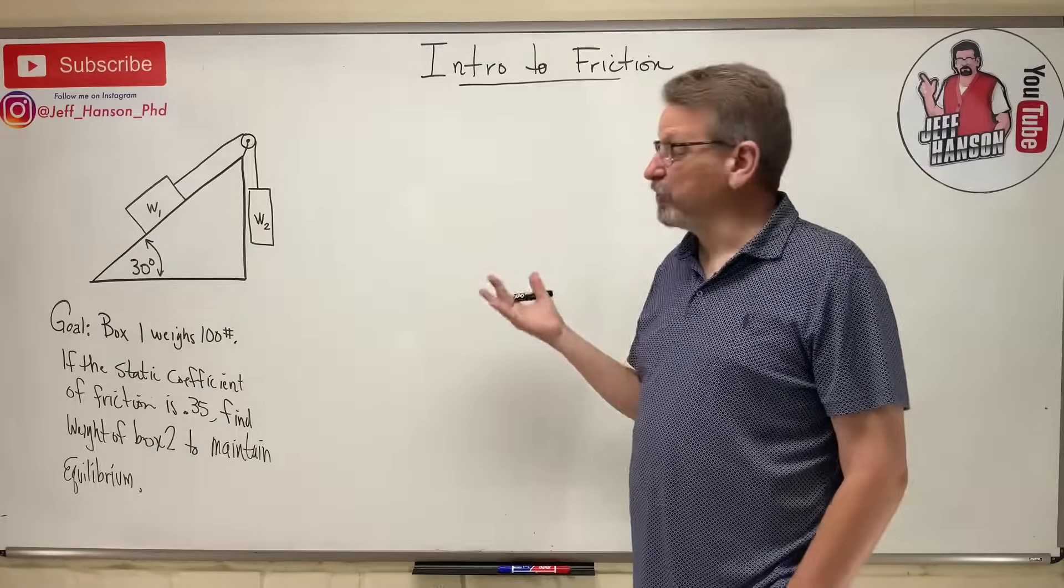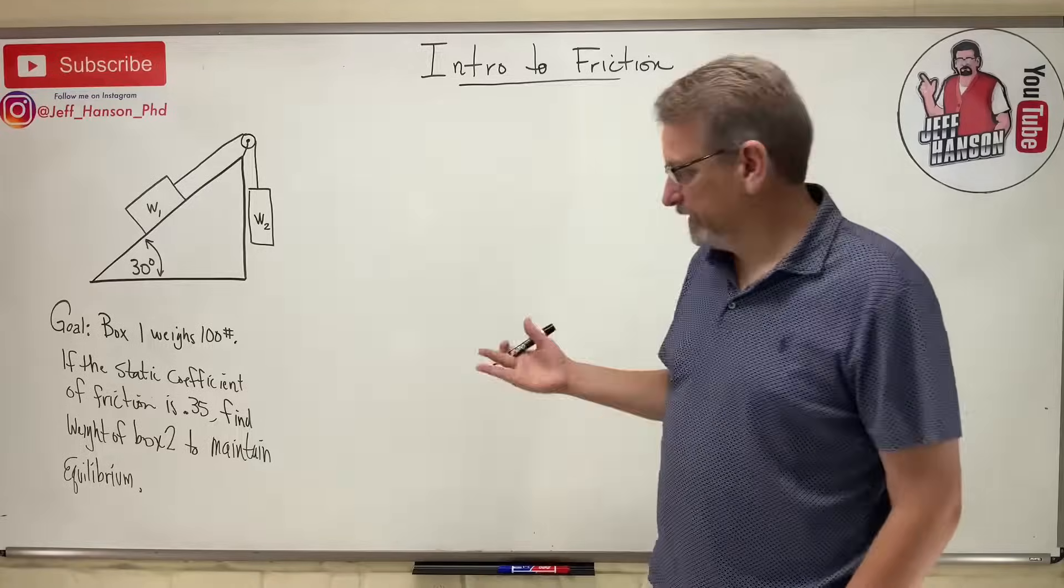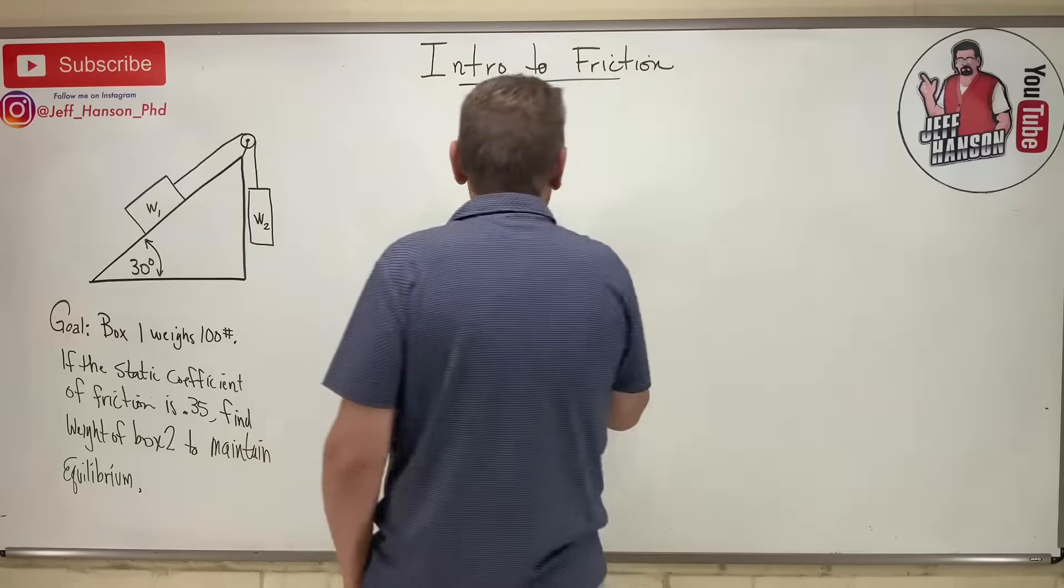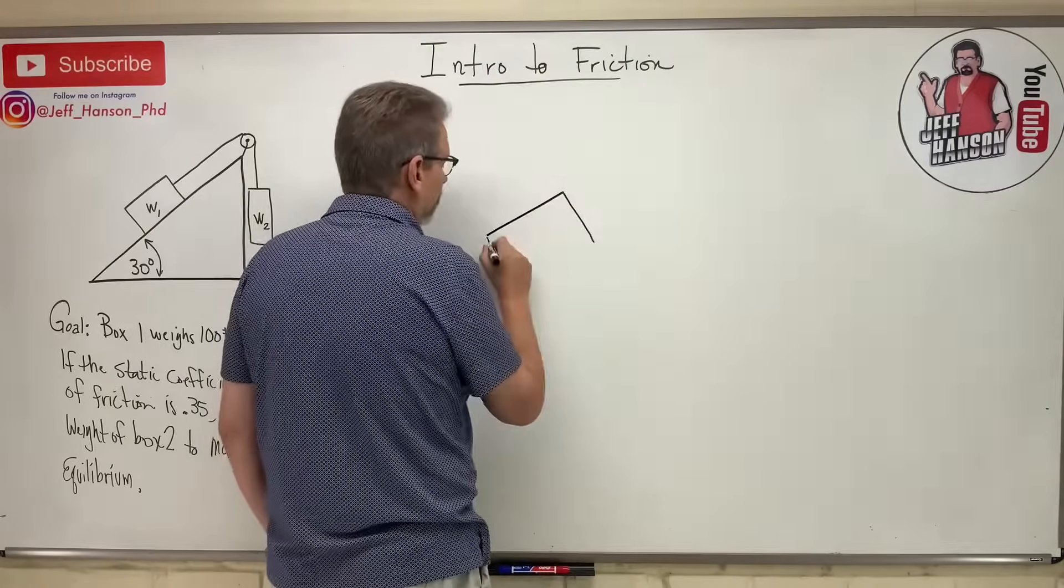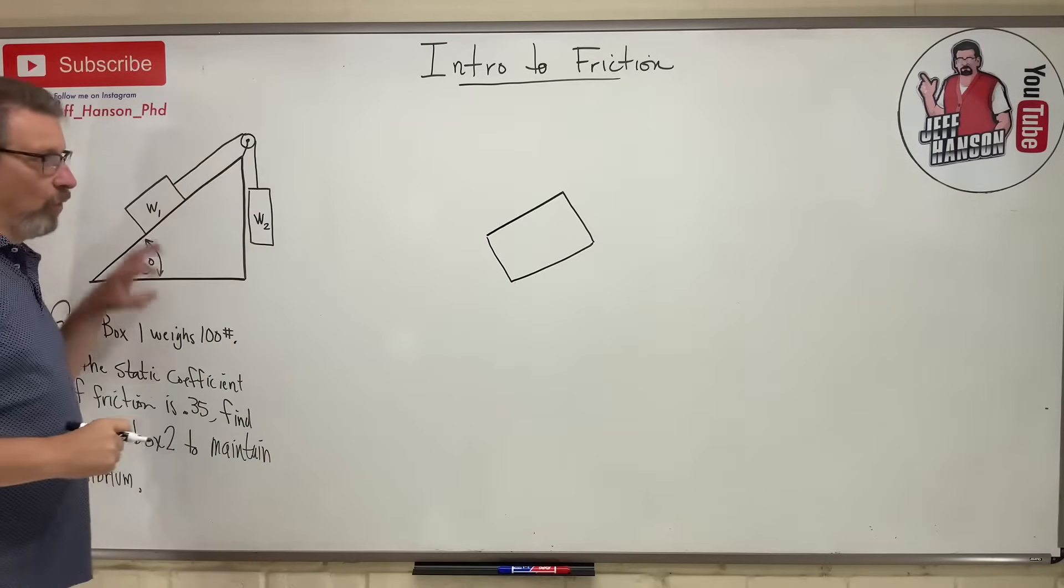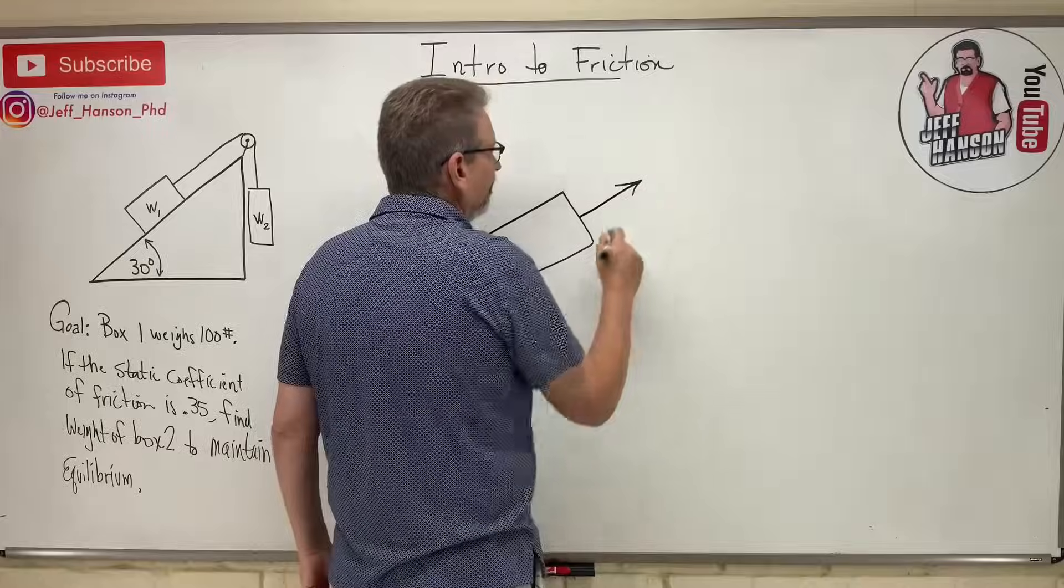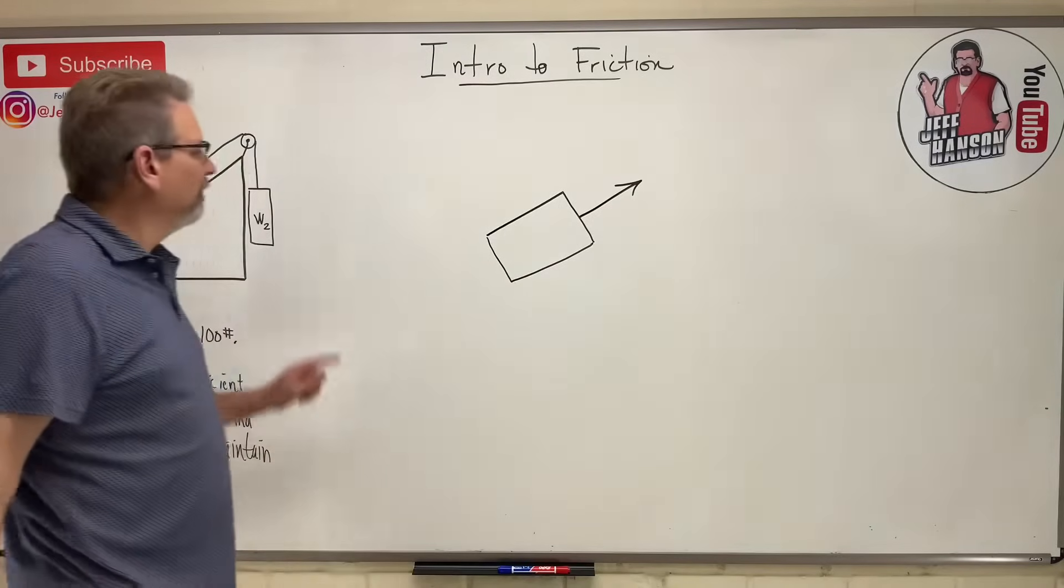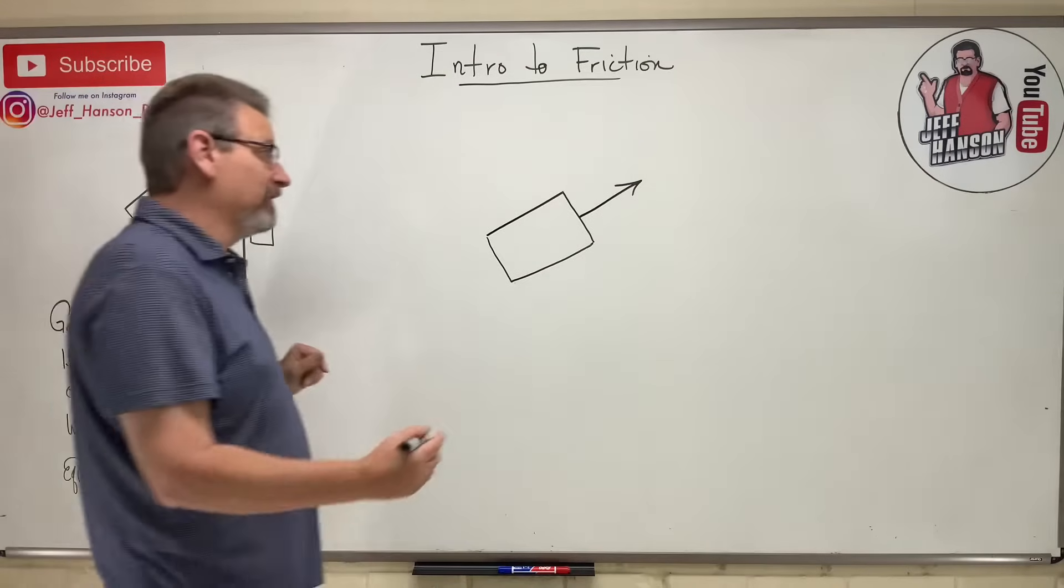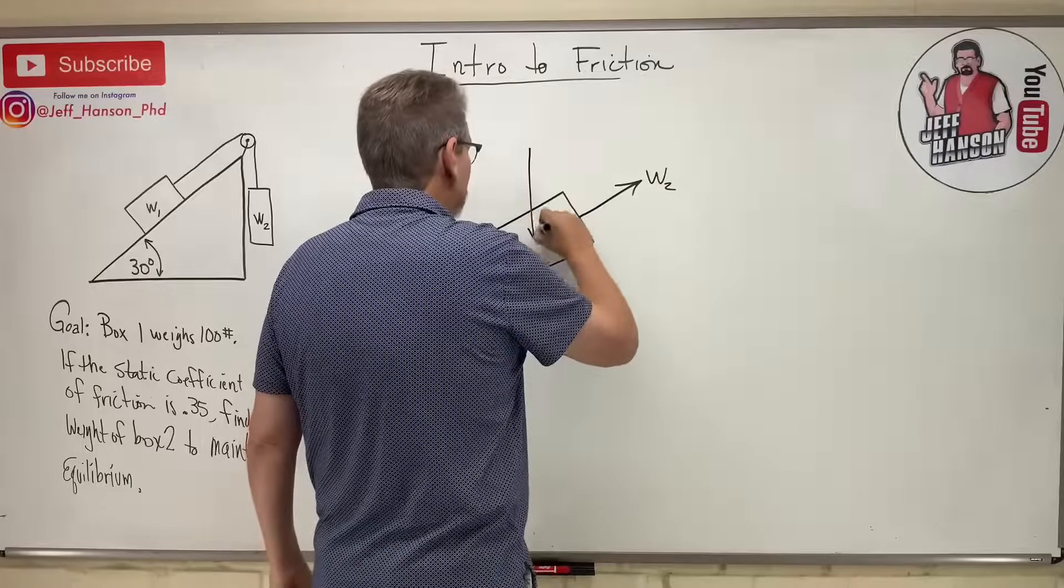All right, so this is like a quintessential friction problem. If you take the FE test, this problem will be on there. It's always on there. So how do we do this? First, let's draw a free body diagram of the box. So there's my box. That's this box W1. What is acting on box W1? Well, it's got a rope here and I could put a T there, but we know that rope going over a pulley, the weight on this side is the same as the weight on that side. So I could just call this W2 here. The weight of the box is 100 pounds. That's given.